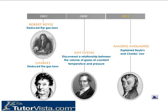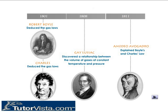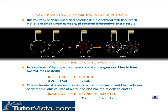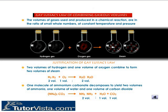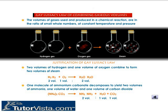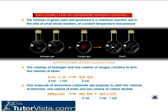In 1811, Avogadro was able to explain Boyle's and Charles' and Gay-Lussac's Law. Gay-Lussac's Law of Combining Gaseous Volumes states that the volumes of gases used and produced in a chemical reaction are in the ratio of small whole numbers at constant temperature and pressure.